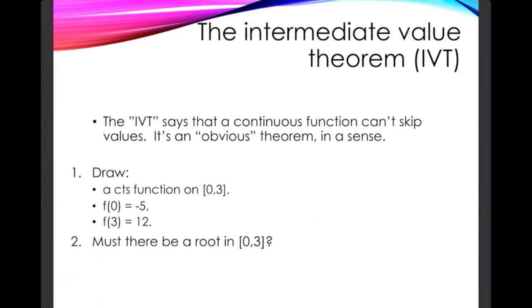So the intermediate value theorem says that a continuous function can't skip values. It kind of feels like an obvious theorem in a way, because if I have to connect dots and I can't skip, then I can't skip.